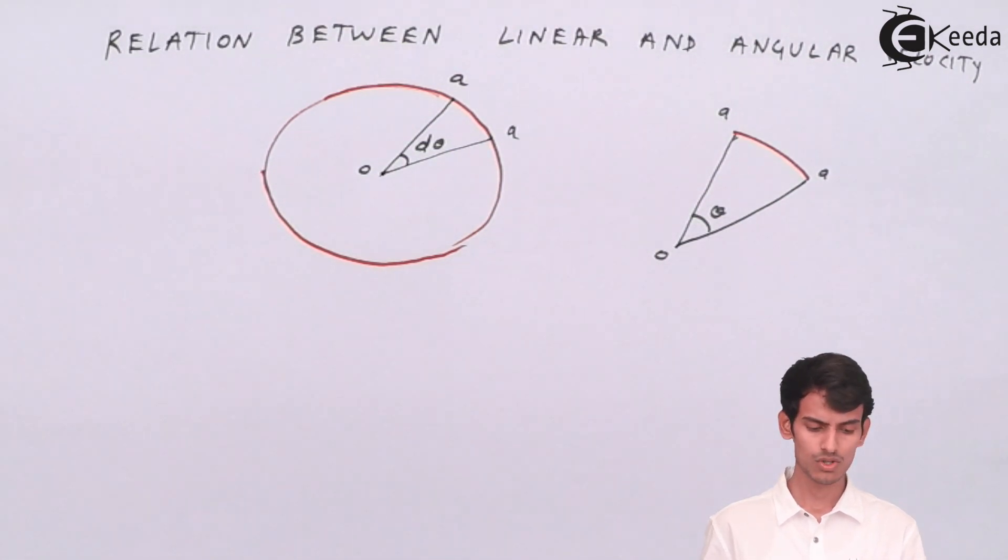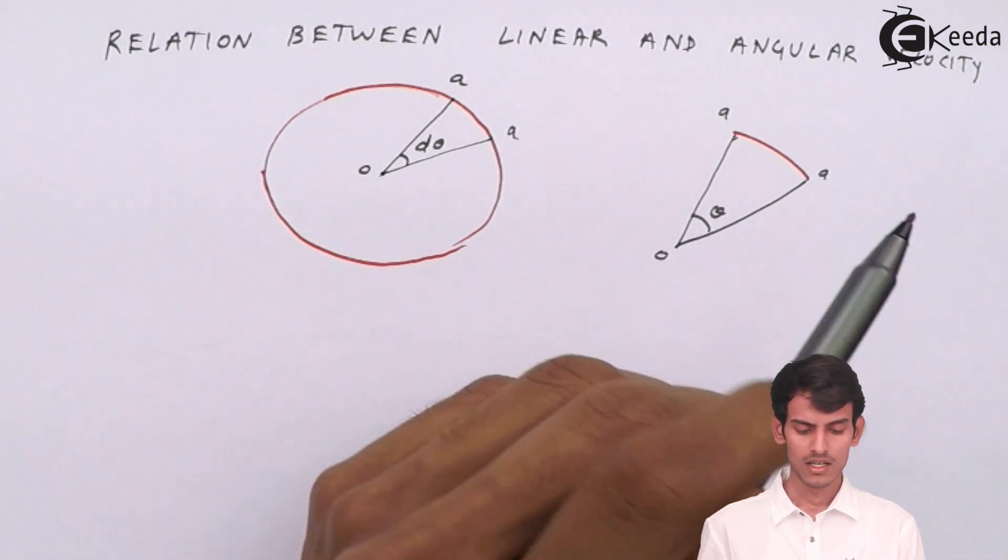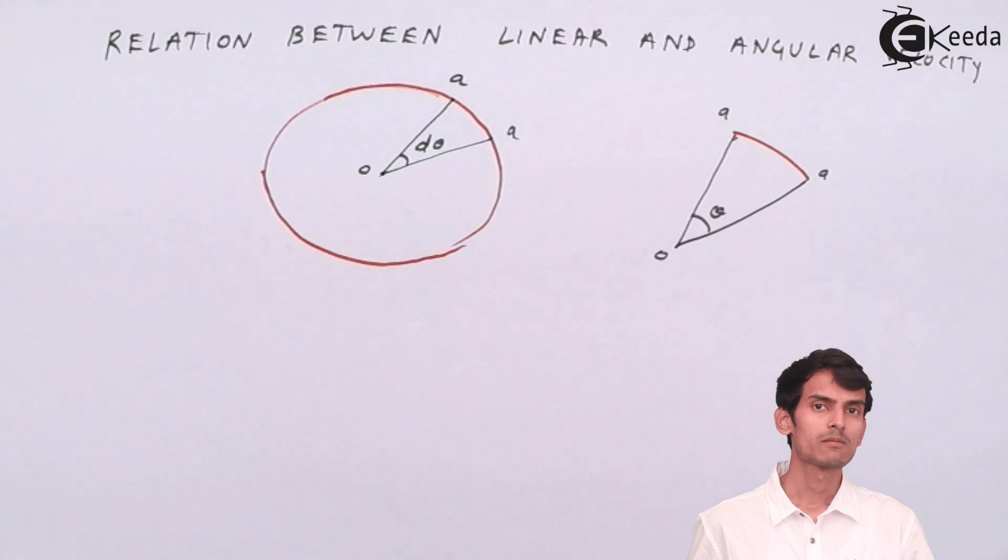Now the question arises, since the motion is circular how can I say that the red part is the linear displacement? I have imagined that the displacement is very small, the angular displacement is very small. So if you consider a very small part of a circle it looks almost like a line. So you can consider it as a line and since it is a line the displacement can be called as linear displacement.